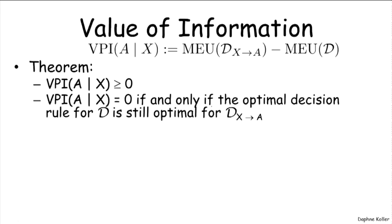Let's look at some properties of the value of perfect information. The first important property, assuming there is no cost to the information — not counting the cost of conducting the survey — is that the value of perfect information is always greater than or equal to zero. To convince ourselves, let's look at this expression which compares the maximum expected utility between two different influence diagrams, where each is obtained by optimizing over a decision rule.